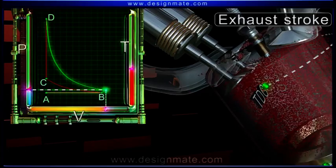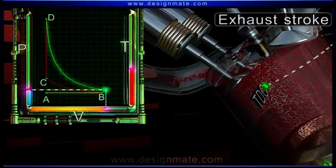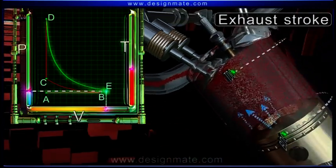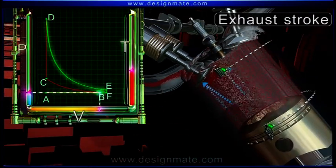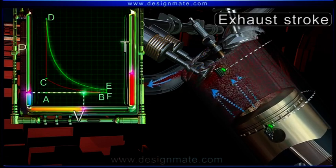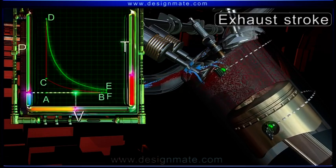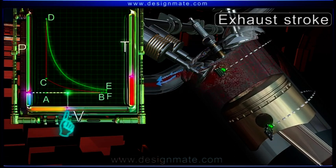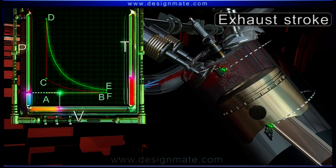Consequently, the pressure suddenly falls to atmospheric pressure with almost no change in volume. The piston now moves towards TDC, forcing the exhaust gases out of the cylinder. The volume occupied by the gases decreases at constant atmospheric pressure.